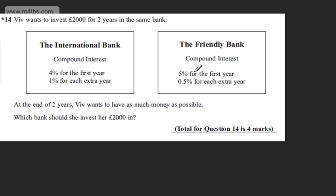And the Friendly Bank, compound interest, 5% for the first year, 0.5% for each extra year. At the end of the two years, Viv wants to have as much money as possible. Which bank should she invest her £2,000 in?